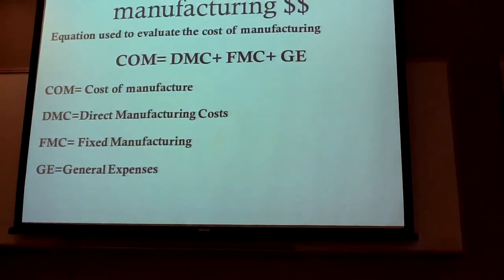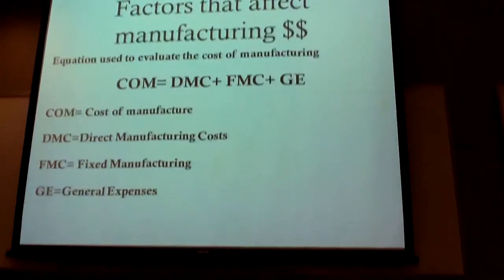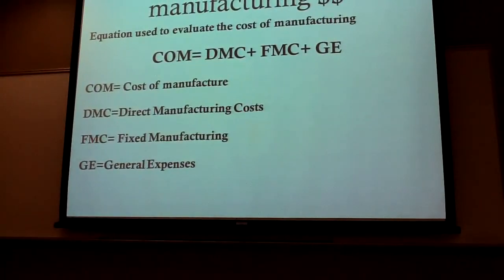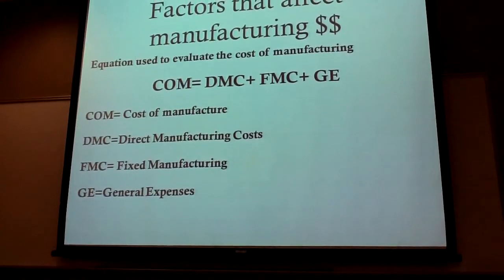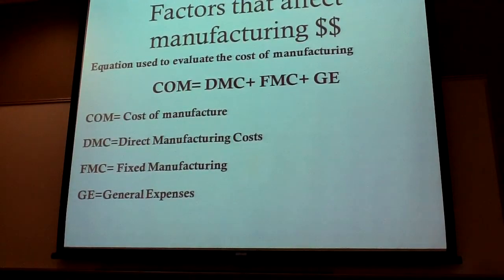So factors that affect manufacturing cost, here's a general equation you can use. It's cost in manufacturing equals direct manufacturing cost plus fixed manufacturing cost and the general expenses.